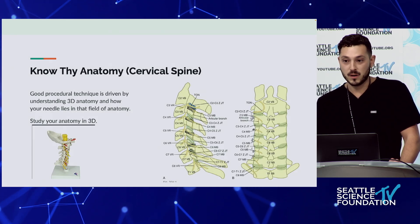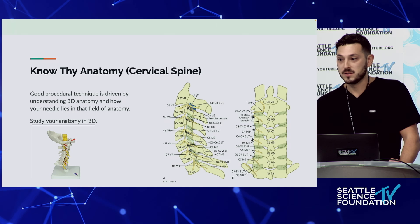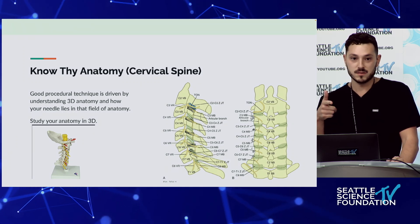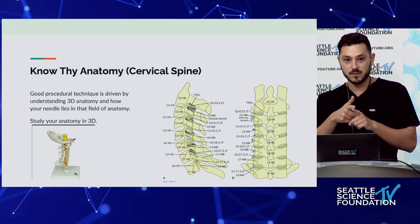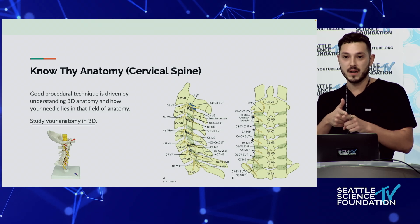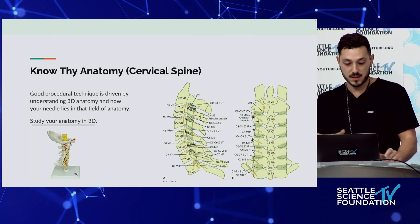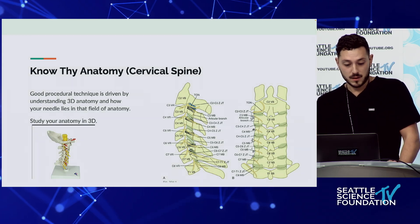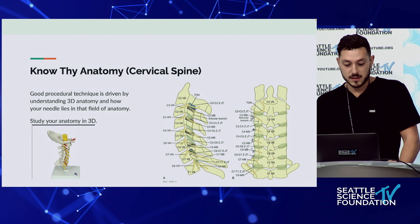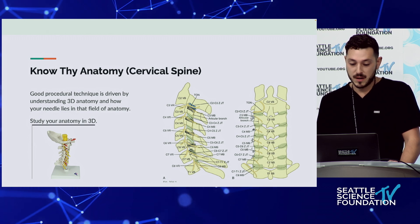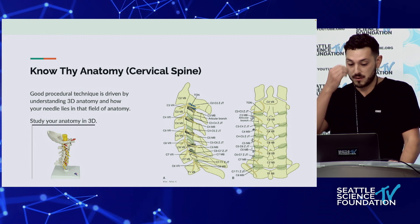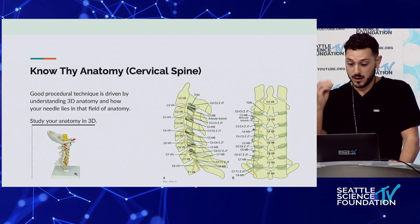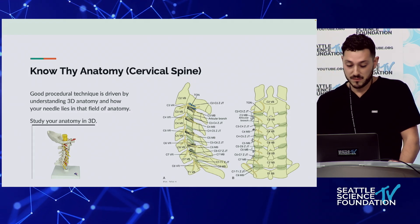I recommend working in three dimensions - get a spine model, look at it, get needles, and figure out how it correlates to what your x-ray picture looks like. Know your anatomy. Good procedural technique is driven by understanding your anatomy in 3D. When we're thinking about the cervical spine, your main views when doing radiofrequency ablation require you to know where the medial branches lie.